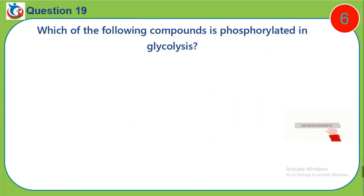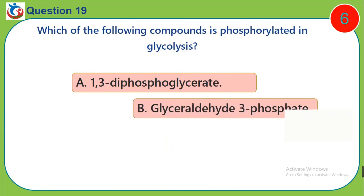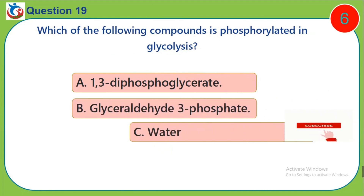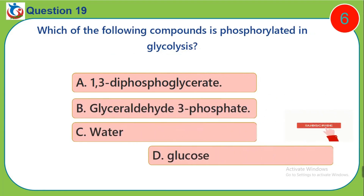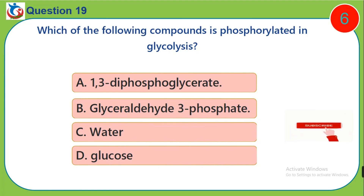Question 19. Which of the following compounds is phosphorylated in glycolysis? A. 1,3-diphosphoglycerate. B. Glyceraldehyde-3-phosphate. C. Water. D. Glucose.